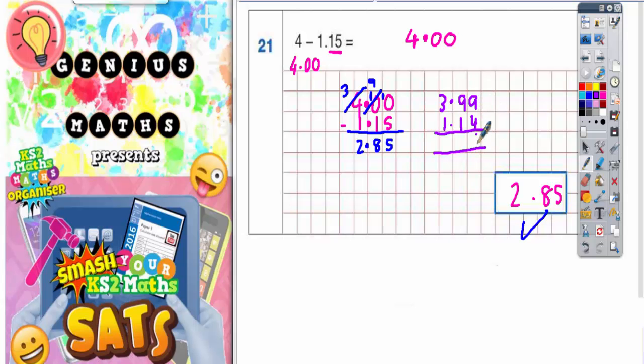So 9 take away 4 is 5. 9 take away 1 is 8 and 3 take away 1 is 2. But this only works because you've made both of them 0.01 less.